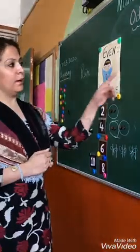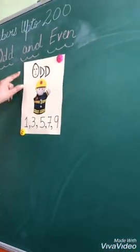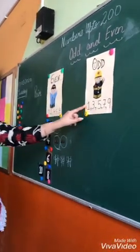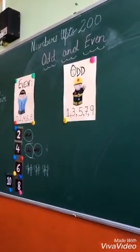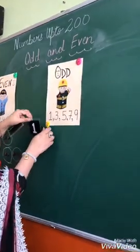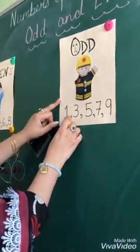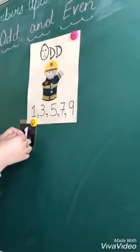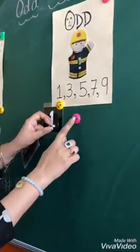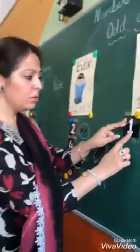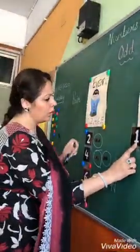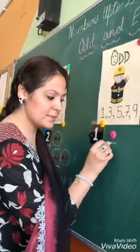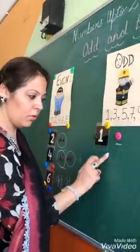Now we will talk about Audi the Odd. If I take the example of odd number one — I have one smiley standing all alone here. Does this smiley have a partner? No, it is all alone, so I cannot form a pair. It comes under Audi the Odd.